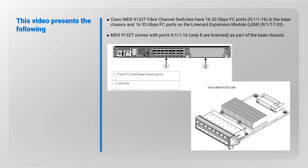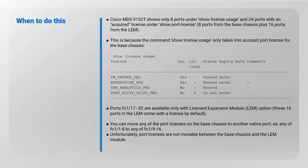The MDS 9132T comes with only eight licensed ports from FC1/1 to FC1/16 as part of the base chassis. The command 'show license usage' shows only eight ports, while 'show port license' shows 24 ports with an acquired license — eight ports from the base chassis plus 16 ports from the LEM. This is because 'show license usage' only takes into account port licenses for the base chassis. Ports 17 to 32 are available only with the line card expansion module option.